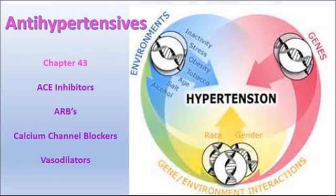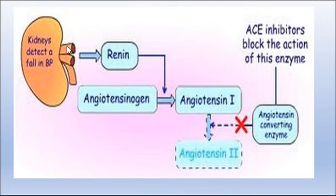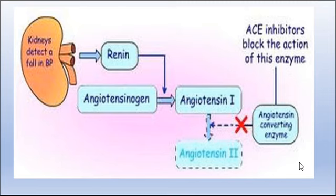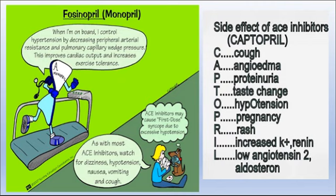This next slide gives a picture of renin, which is released from your kidneys to do this conversion. It blocks angiotensin-1 from converting into angiotensin-2. Angiotensin-2 is a vasoconstrictor constricting those vessels, so all your PRILs will block that conversion. This is a good picture showing how we're avoiding uncontrolled hypertension by decreasing peripheral arterial resistance — it decreases it because it blocks that vasoconstriction.